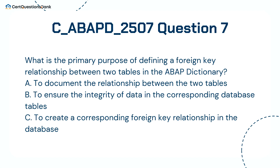What is the primary purpose of defining a foreign key relationship between two tables in the ABAP dictionary? A. To document the relationship between the two tables. B. To ensure the integrity of data in the corresponding database tables. C. To create a corresponding foreign key relationship in the database.